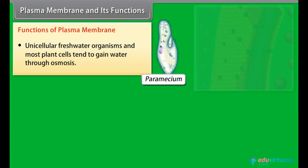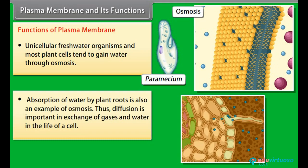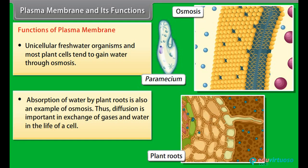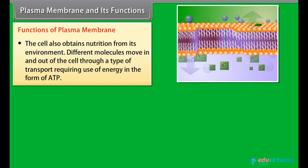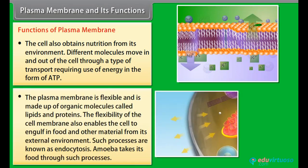Unicellular freshwater organisms and most plant cells tend to gain water through osmosis. Absorption of water by plant roots is also an example of osmosis. Diffusion is important in exchange of gases and water in the life of a cell. The cell also obtains nutrition from its environment — different molecules move in and out of the cell through a type of transport requiring use of energy in the form of ATP.